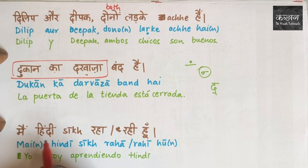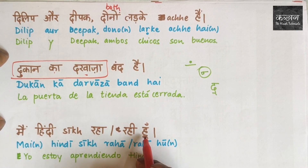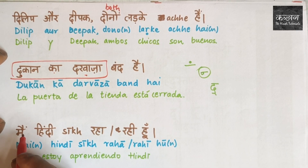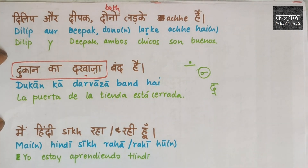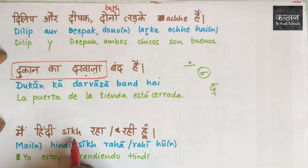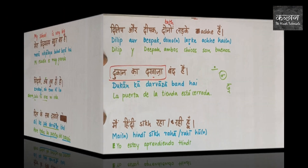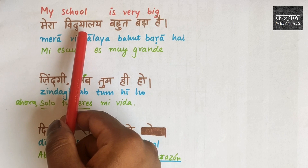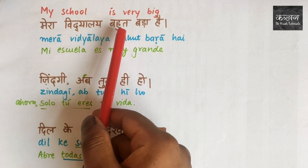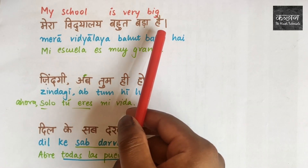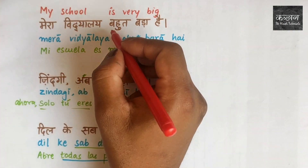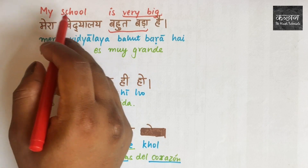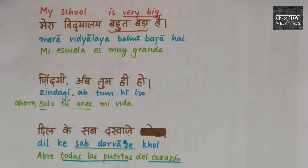Next: 'Main Hindi seekh raha hun' — I am learning Hindi. If you are a woman, you can say 'Main Hindi seekh rahi hun' — I am learning Hindi. Another sentence: 'Mera vidyalay bohut bada hai' — my school is very big. 'Bohut bada' means very big and 'Mera vidyalay' means my school.